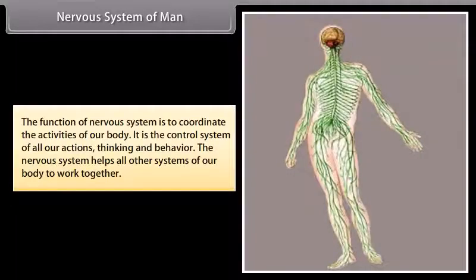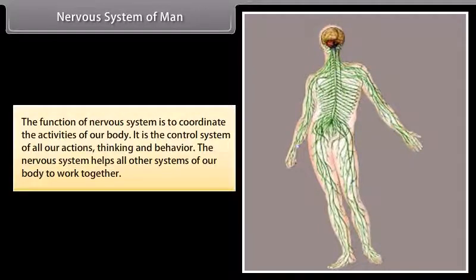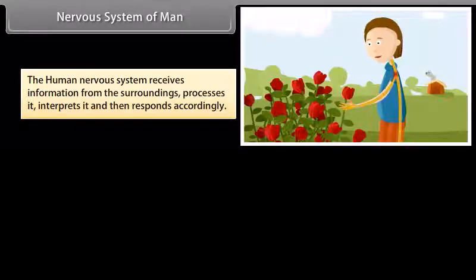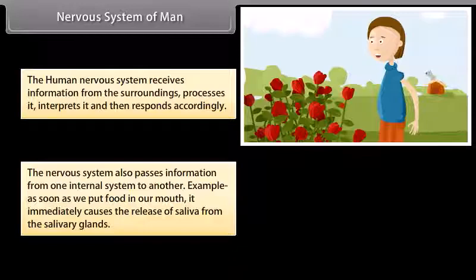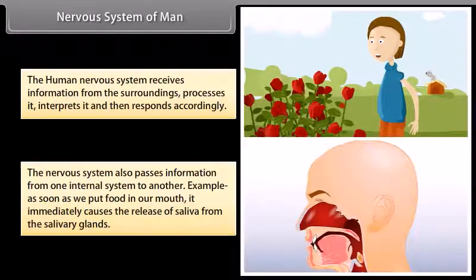The function of the nervous system is to coordinate the activities of our body. It is the control system of all our actions, thinking, and behavior. The nervous system helps all other systems of our body to work together. The human nervous system receives information from the surroundings, processes it, interprets it, and then responds accordingly. The nervous system also passes information from one internal system to another — for example, as soon as we put food in our mouth, it immediately causes the release of saliva from the salivary gland.